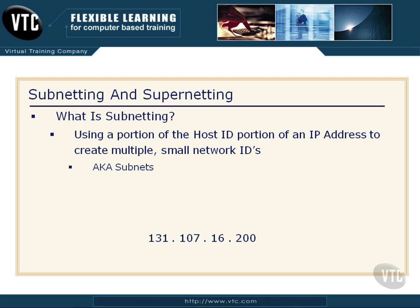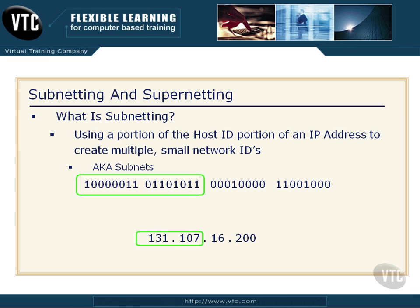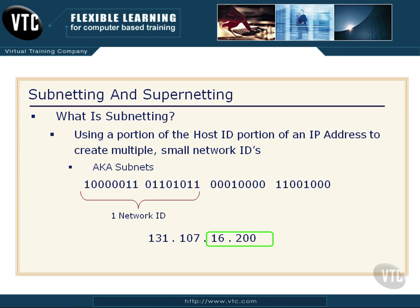Let's start off with an IP address. We have an IP address of 131.107.16.200. If you look at that in binary, this is what it looks like. The 131.107 is part of our network ID, so we have one network ID. The 16.200 is our host ID. We have 65,535 possible host IDs on the 131.107 network. I'm leaving some things out here to keep from confusing you even more — I'm actually going to lose two of those, but we won't get into that right now.